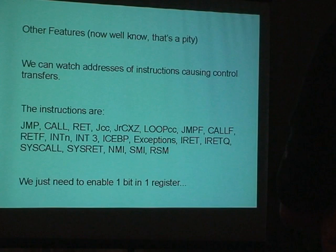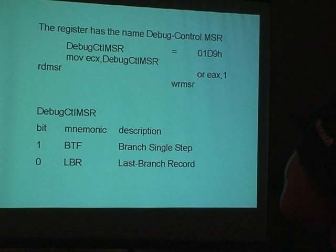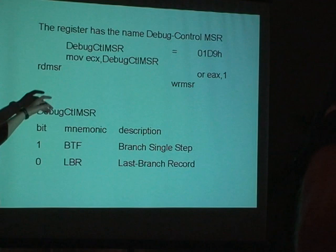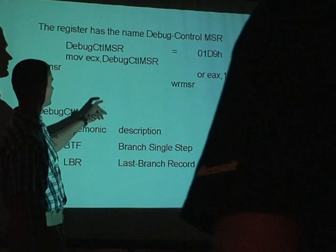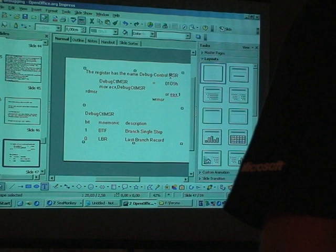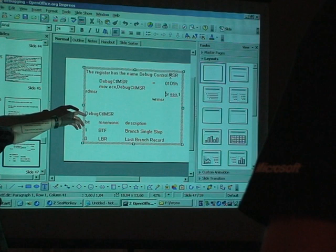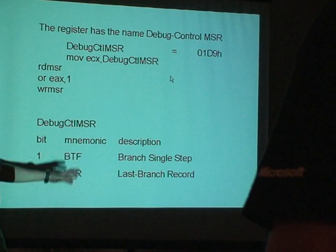Neither Windows nor Linux expose this one bit by default. You can do it if you write your own driver. It can be very useful if you're dealing with unpacking programs. The name of this register is Debug Control MSR, and the value is the same in Intel and AMD. Here is a sample of how to read and how to set this one bit in this control register.